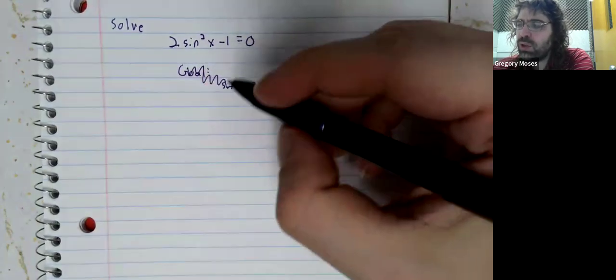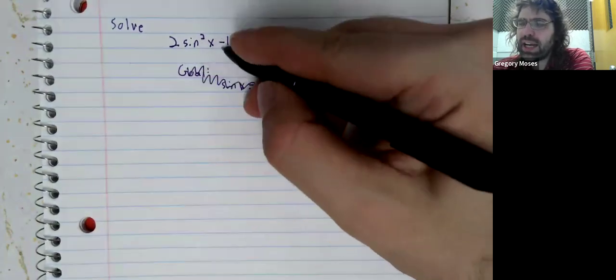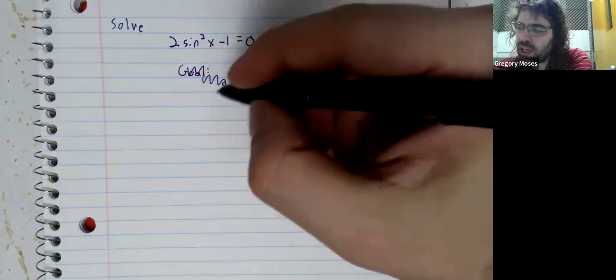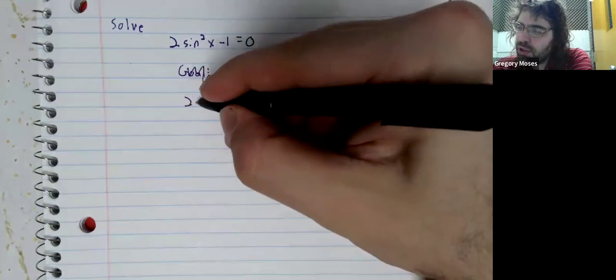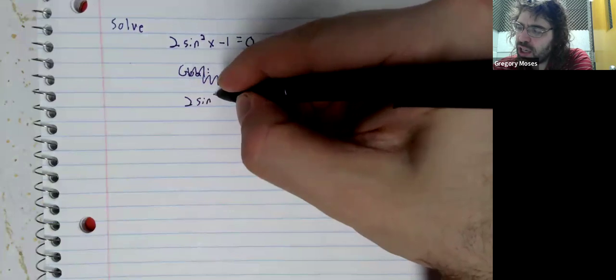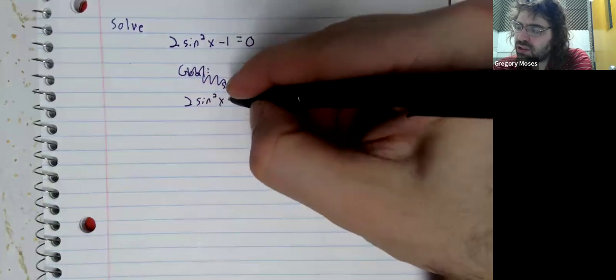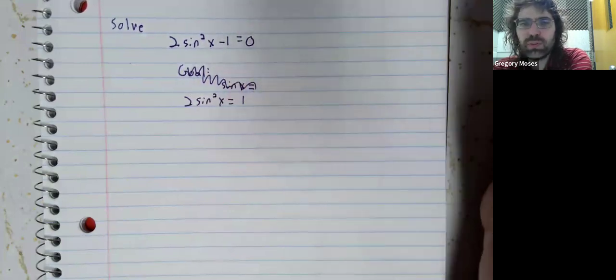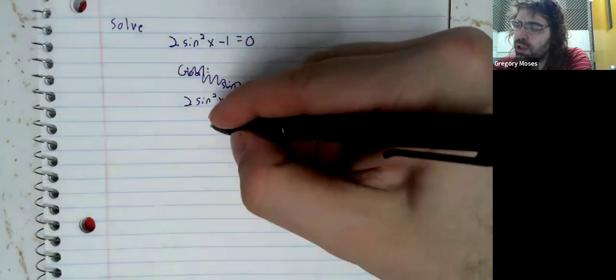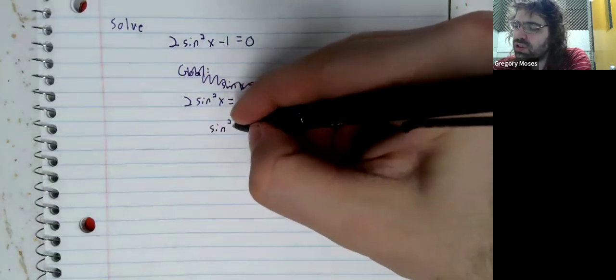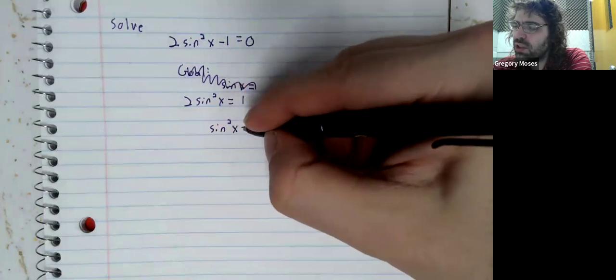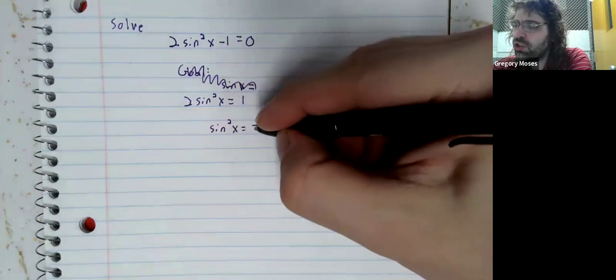So we can add 1 to both sides. 2 times the sine squared of x equals 1. We can divide both sides by 2.